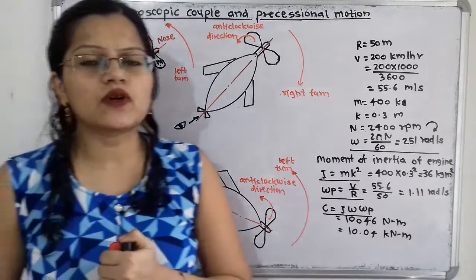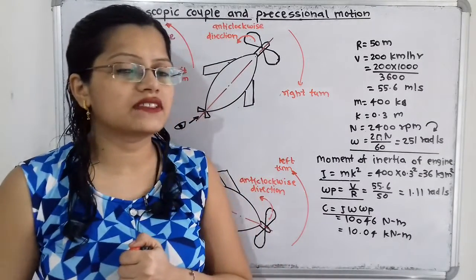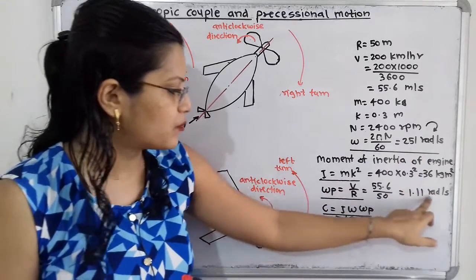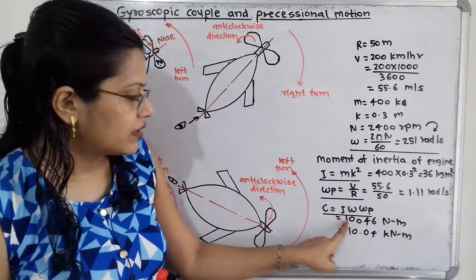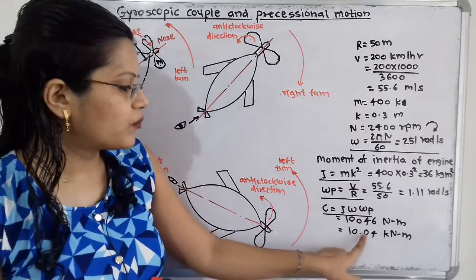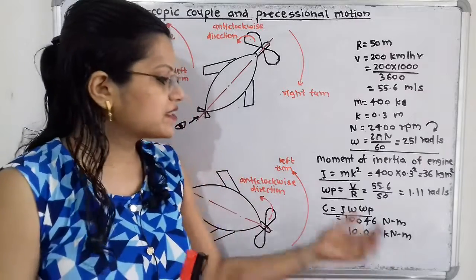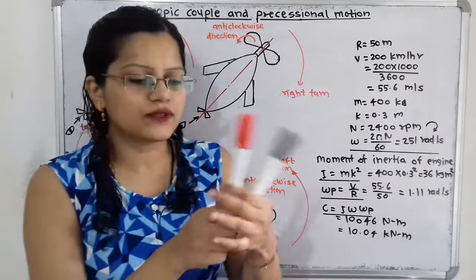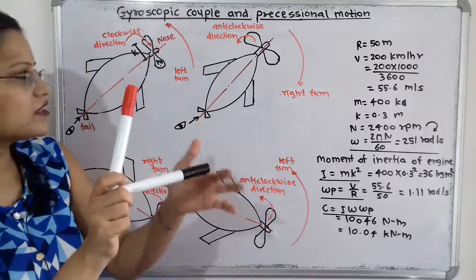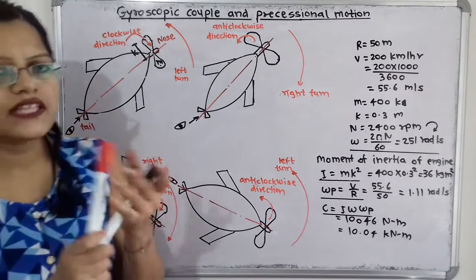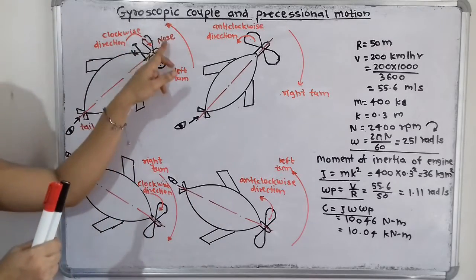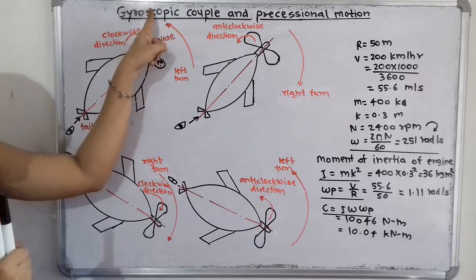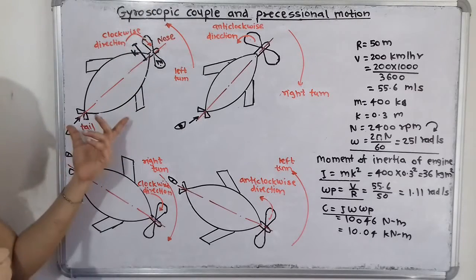Now it is easy to find the gyroscopic couple. The gyroscopic couple C = I × omega × omega_p. Putting in the values: 36 × 251 × 1.11 = 10.04 kilonewton metres. The effect on the aeroplane: since the aeroplane is taking a left turn, the observer is at the rear end, and the propeller is rotating in the clockwise direction, there is a raise in nose and dip in tail.